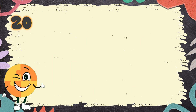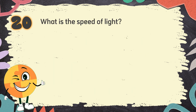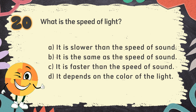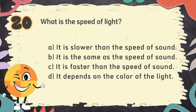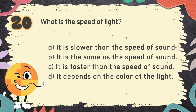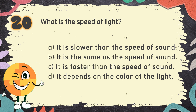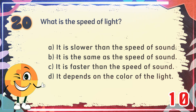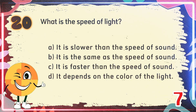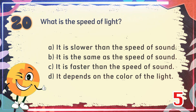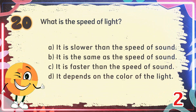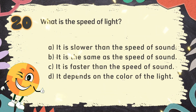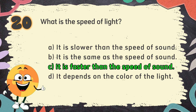Number 20. What is the speed of light? The choices are: A. It is slower than the speed of sound, B. It is the same as the speed of sound, C. It is faster than the speed of sound, D. It depends on the color of the light. The correct answer is C. It is faster than the speed of sound.